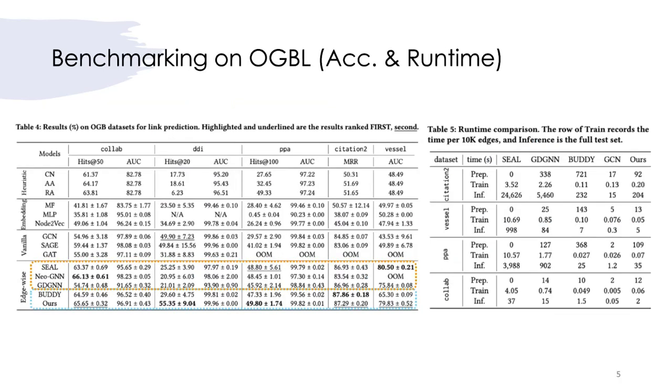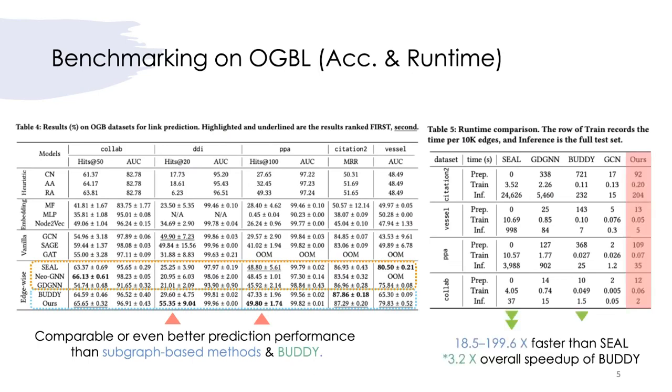Extensive experiments are conducted to evaluate the effectiveness of our proposed framework. On the popular OGBL benchmarks, bloom signature produces comparable and even better prediction performance than existing subgraph-based and heuristic-based methods, while being 3 to 200 times faster in training and inference.